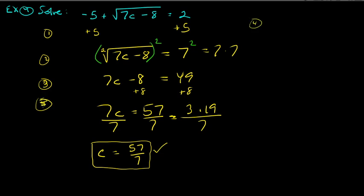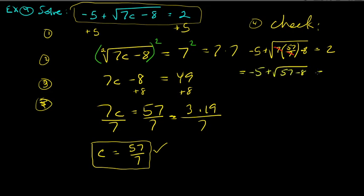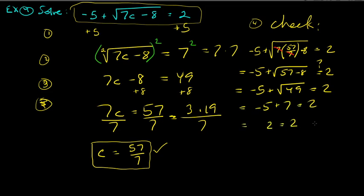Step four: check. Replace c with 57 over 7 in the original equation. The 7 in the numerator and denominator cancel, leaving negative 5 plus the square root of (57 minus 8). That's the square root of 49, which is 7. And negative 5 plus 7 is 2. Two equals 2 — correct.